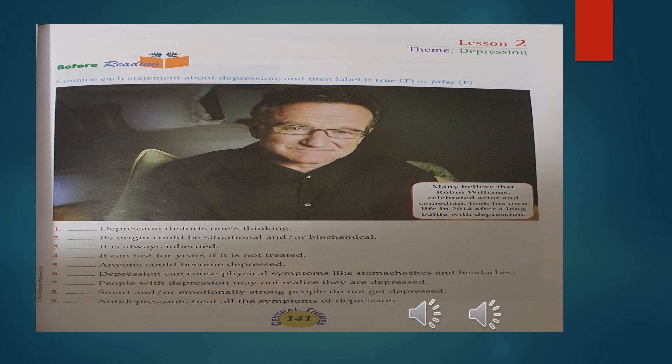Our reading lesson in the theme of current global issues will be lesson two, related to depression. Depression could also be a current global issue based on the social and economic conditions a country or area is suffering from. For that, we are going to do a before-reading activity to prepare ourselves for the reading text. Let's look at the nine sentences related to depression and label if these sentences are true or false.